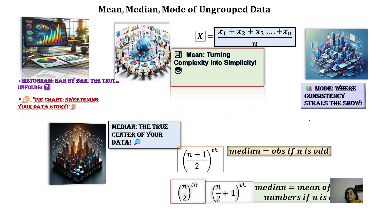Then we have mode, where consistency shows — if a particular number repeats most often, that is the mode value. This is especially useful so people can conclude which particular item is most in demand. Then we have the median — the true center of the data. If the number of observations is odd, say 9, then (9+1)/2 = 5, so the fifth observation is the median. If the number of observations is even, say 8, then we take the 4th and 5th observations and find their mean to get the median value.